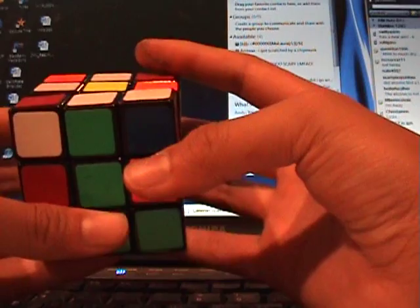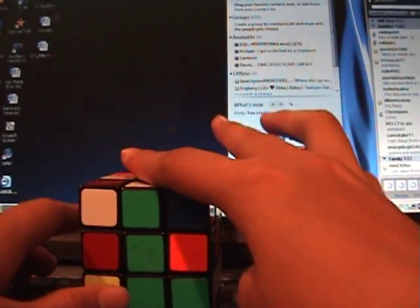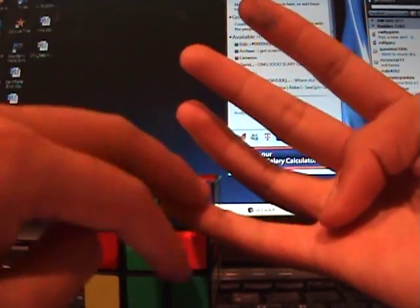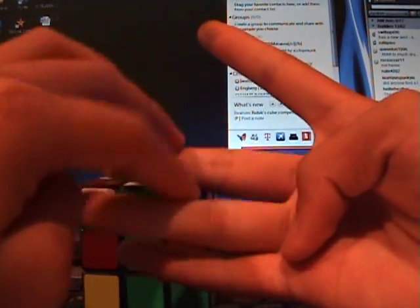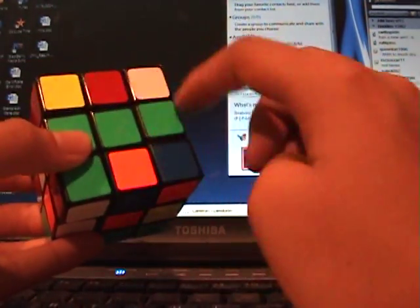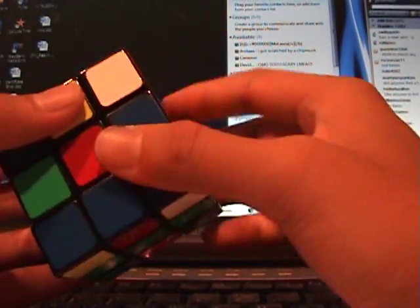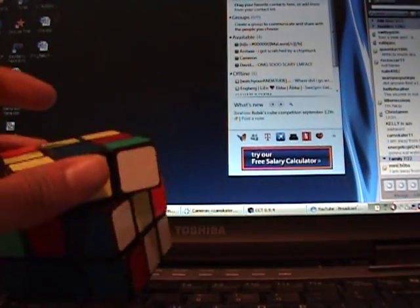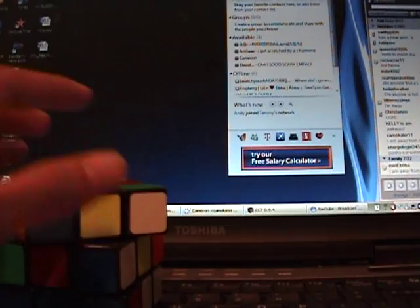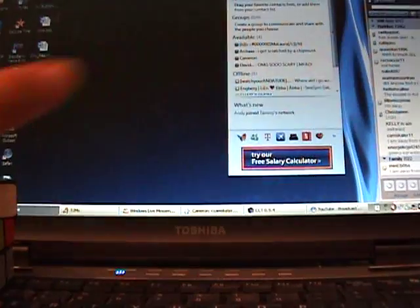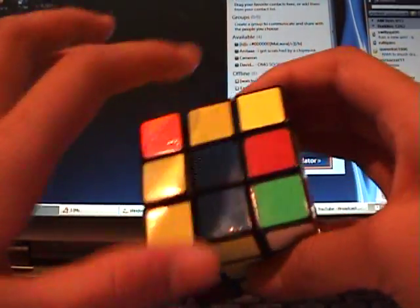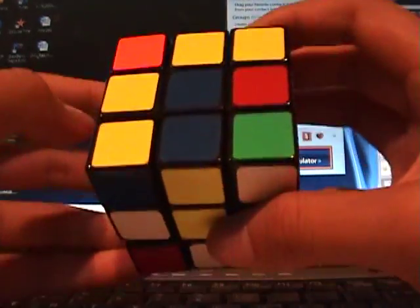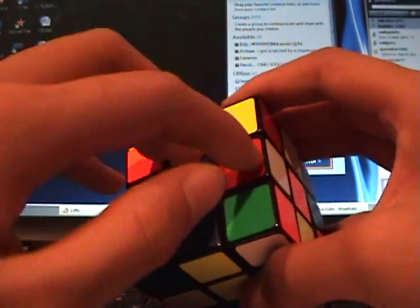Here's a cube, and the Fridrich method has 4 parts. People call it CFOP: Cross, F2L, OLL, and PLL. The cross is the basic cross. F2L is basically the first 2 layers - when the top isn't solved, but you solve these bottom 2. OLL is when you orient the last layer, getting all the colors at the top. PLL is permute, meaning you just move the edges or corners where they need to go, and it's solved.